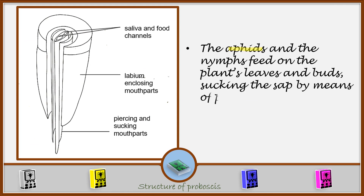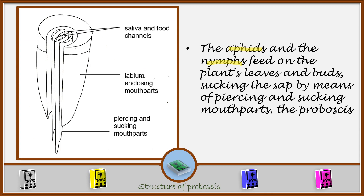The aphids and the nymphs feed on plant leaves and buds by sucking the sap by means of piercing and sucking mouth parts — the proboscis. Let us look at the different parts of the mouth part, or what we are referring to as the proboscis.